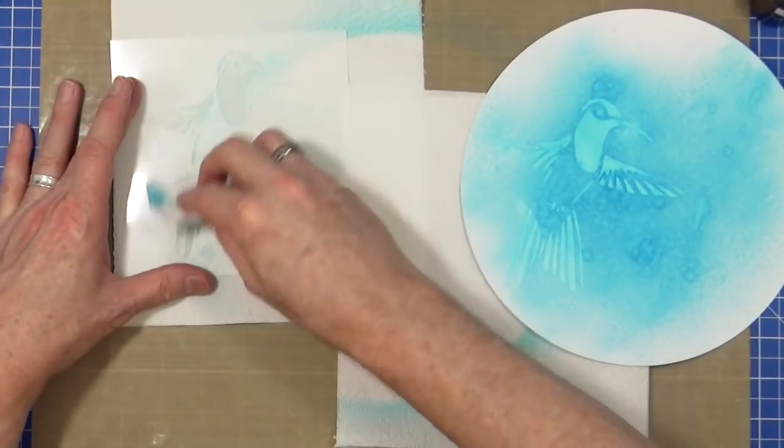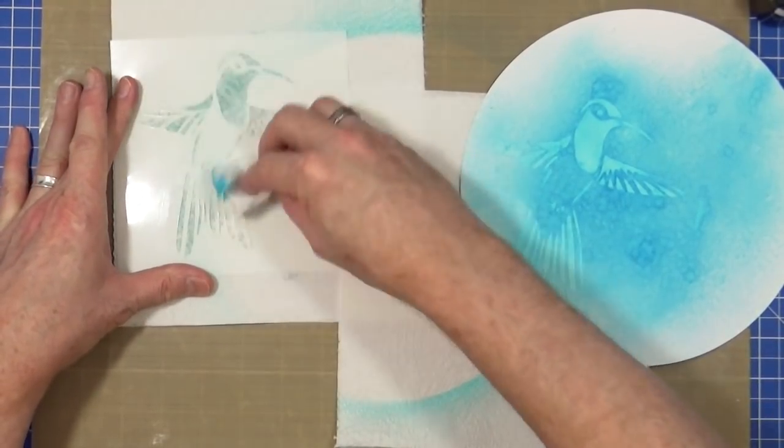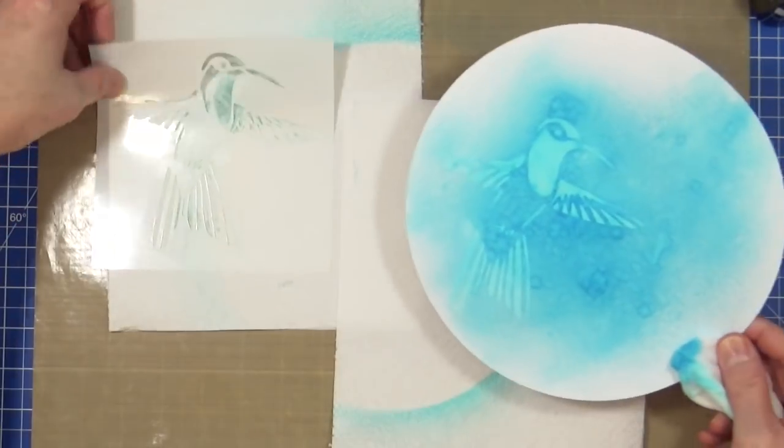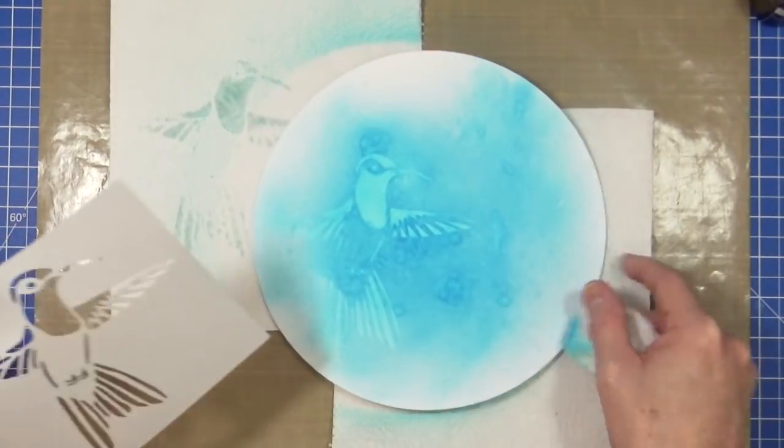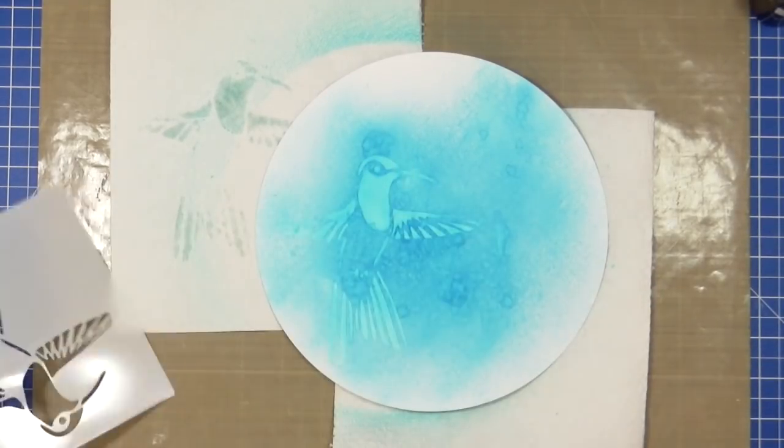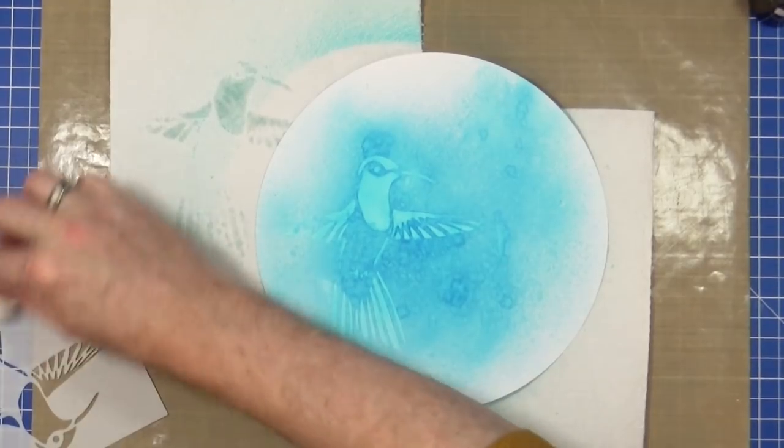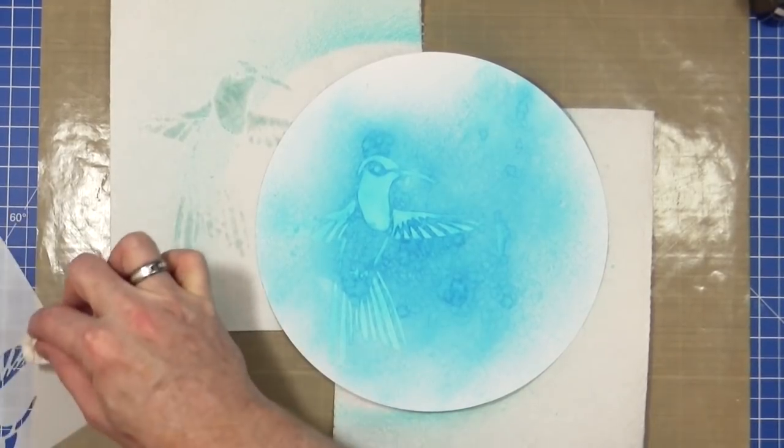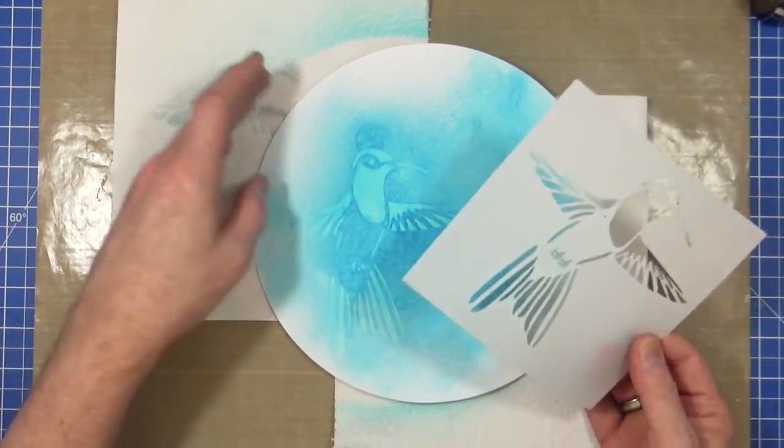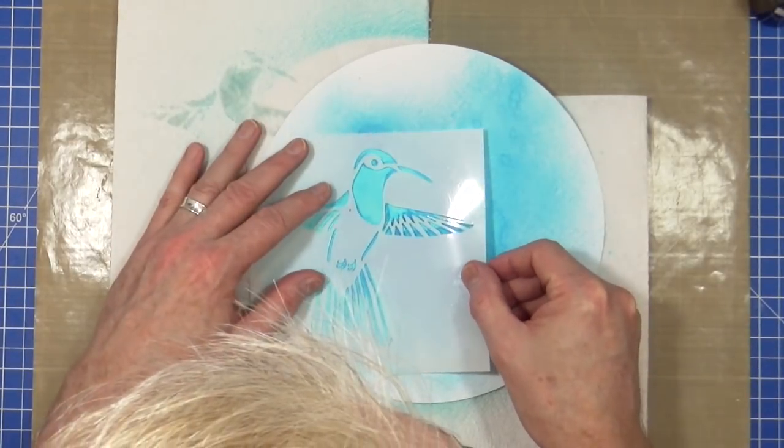Okay. You can see we've got a kind of ghosted image of the hummingbird. So let me just gently clean that off. Still a little bit wet. Okay. The beauty of this is, you've done it once, you can lay it back down again.